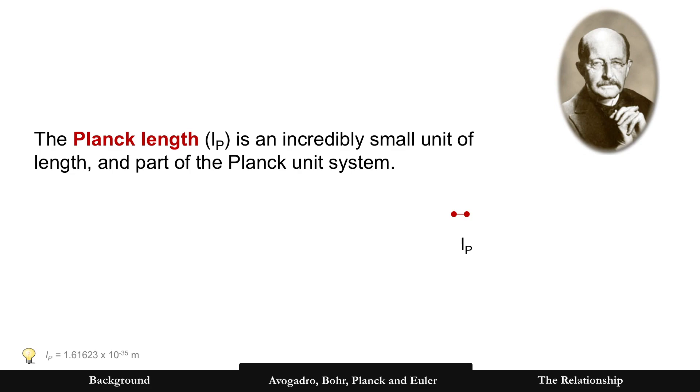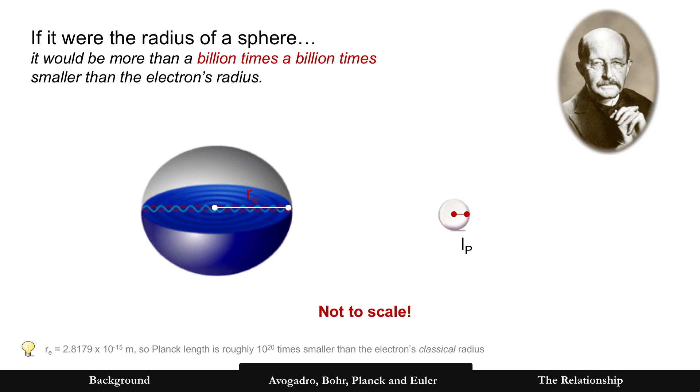Next one is Planck. The Planck length is a really small unit of length, and it's part of the Planck unit system. It's got other ones that I'll highlight too in a second. But Planck length is so small. If it were the radius of a sphere, let's just compare it to the electron, which itself is already incredibly small. Planck length would be more than a billion times a billion times smaller than the electron's radius. So obviously this is not to scale as in comparing that little white sphere to the electron on the left.